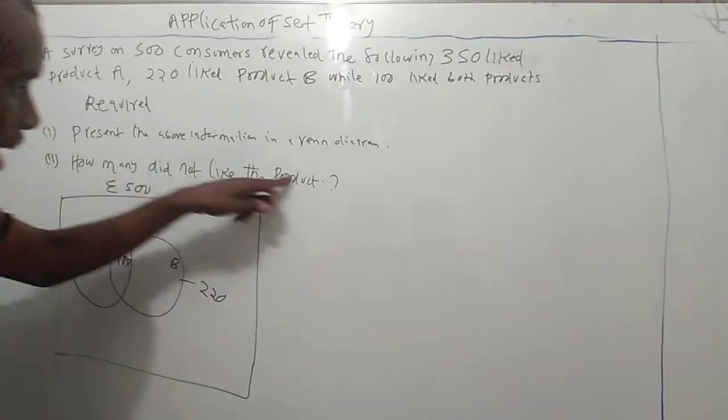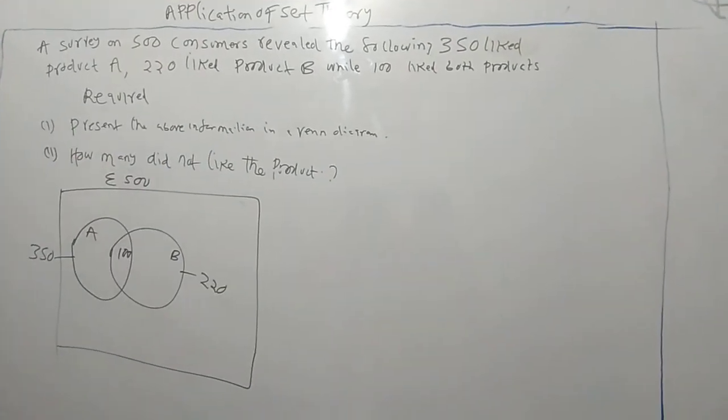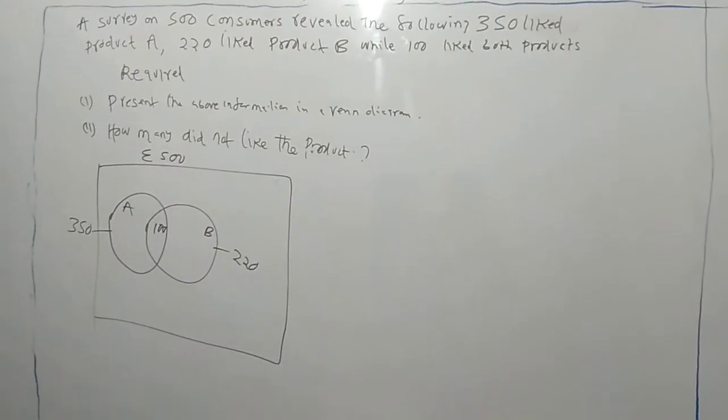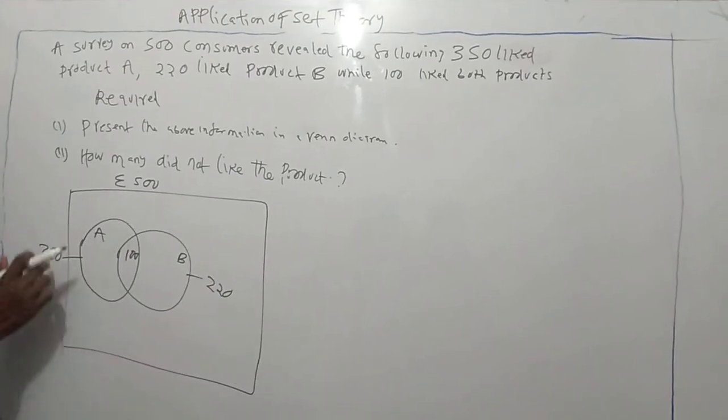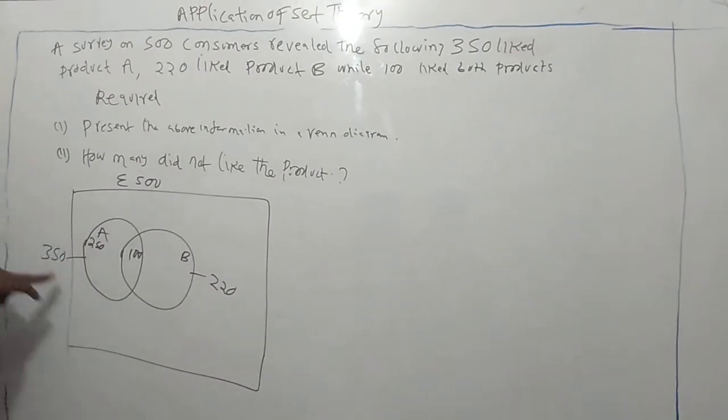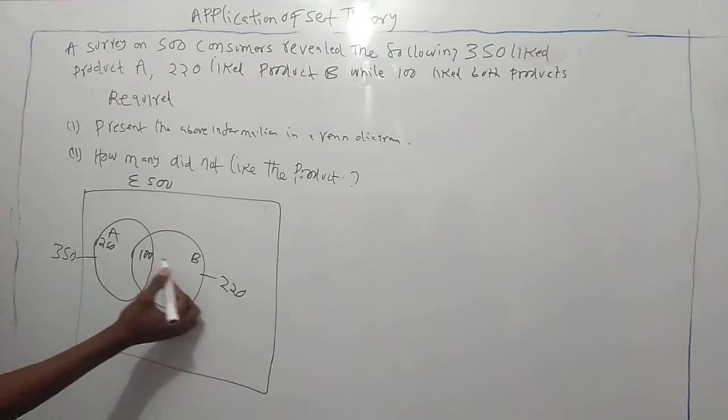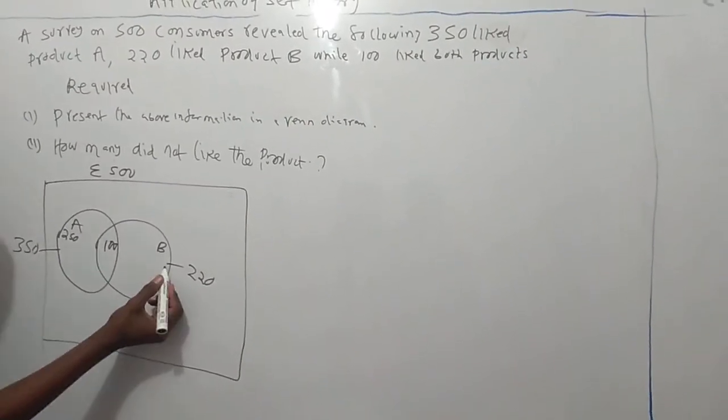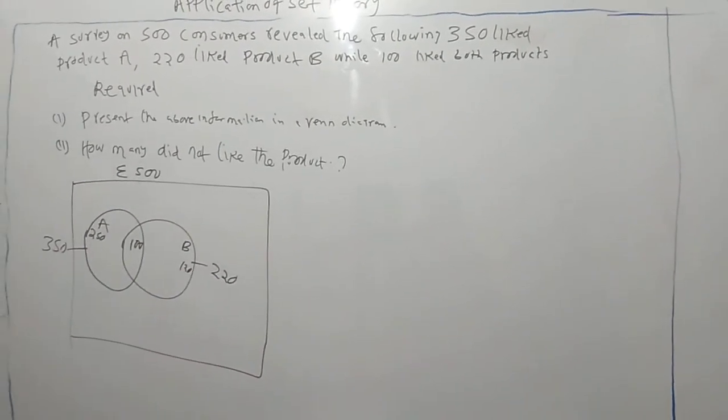Then we are asked, how many do not like the product? For you to get how many do not like the product, first we have to know that total of A is 350. That means, if it is 350, for us to get this A only, we take 350 minus 100, which is 250, such that 250 plus 100 will give you 350. We do the same for this. This 220 is the total of B only plus this common. For us to get this B, we subtract 220 from 100, that is 120.